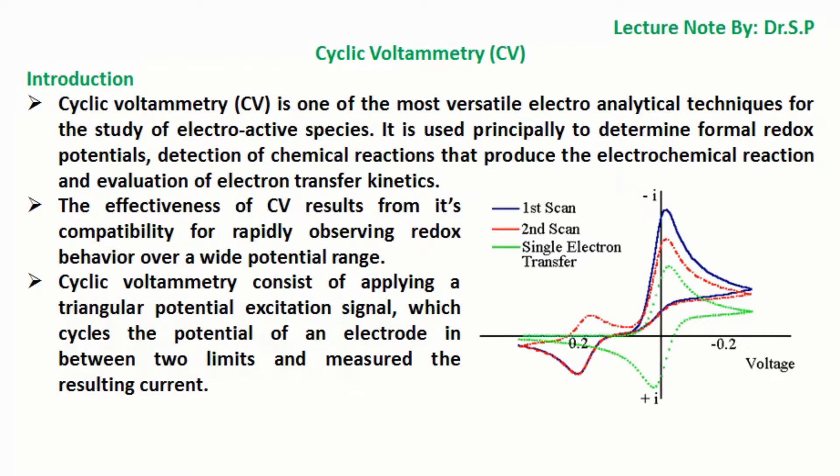It is used principally to determine formal redox potentials, detection of chemical reactions that produce the electrochemical reaction, and evaluation of electron transfer kinetics. The effectiveness of CV results from its compatibility for rapidly observing redox behavior over a wide potential range.